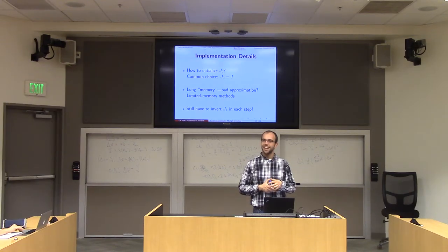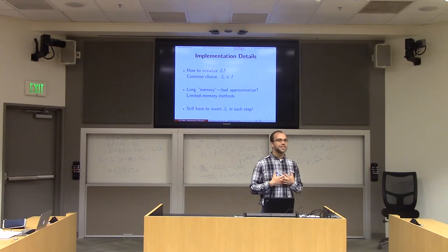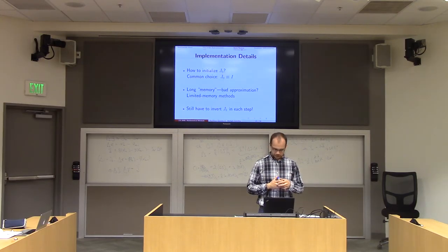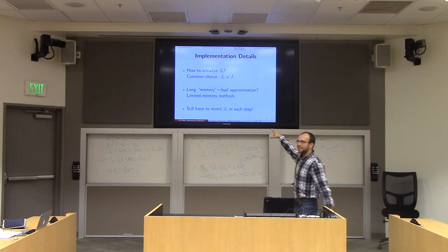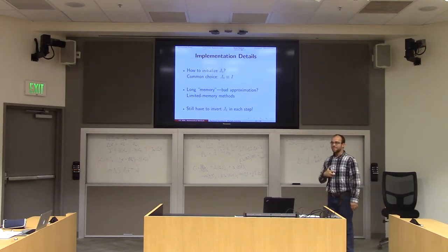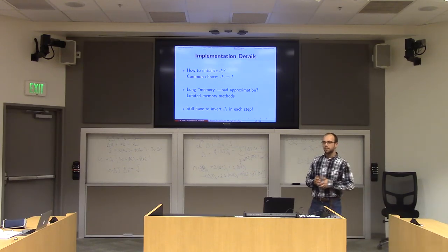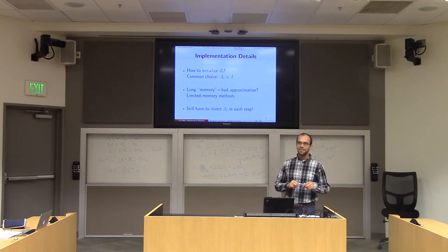I had two complaints but only solved one. One was that differentiation is hard, and the other was that we have to invert our matrix at every step. Broyden's method gets rid of having to take derivatives — we replaced derivatives with secants — but we still have to invert this weird J_k matrix.